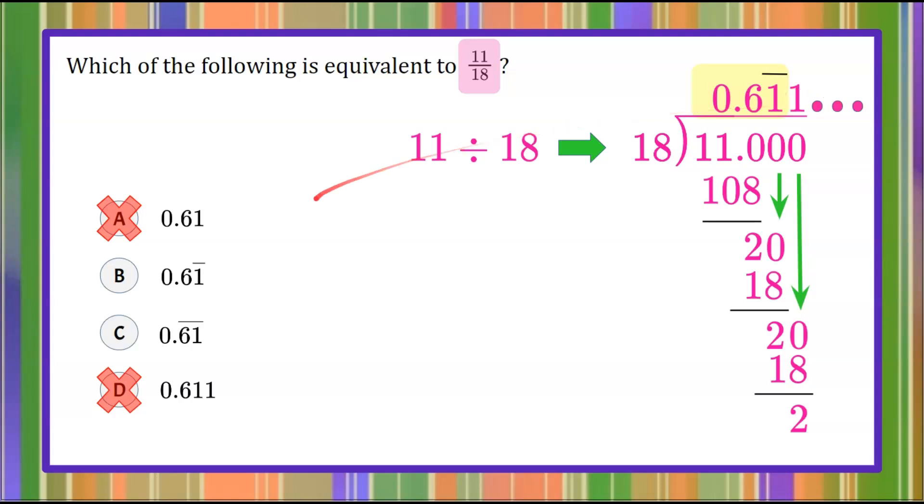So our decimal value that's equivalent here, our answer choice, is going to be answer choice B, where the 1 repeats. So 0.61 repeating. Answer B is equivalent to 11 eighteenths.